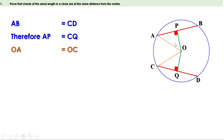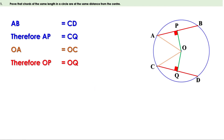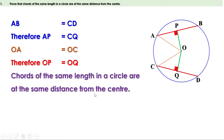That means in these two right-angle triangles, the hypotenuses are equal and the bases are also equal. Therefore the altitudes are equal. Therefore we can say OP equals OQ, or the distance from the center to equal chords are also equal.